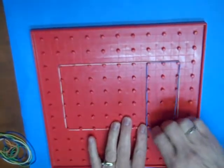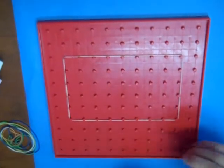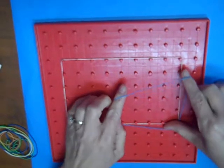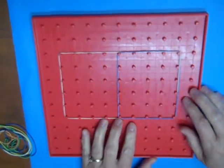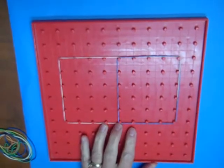I could take that same rectangle and say, well, what does a half look like? And I can put it on like that.